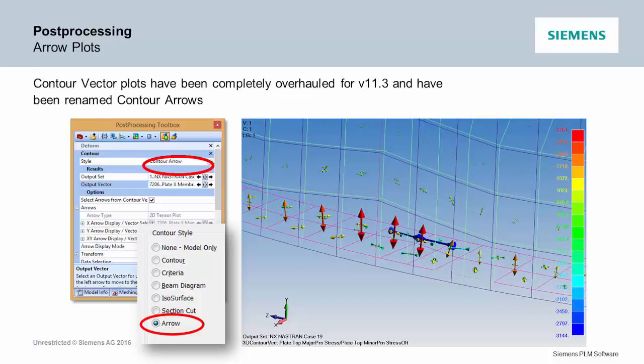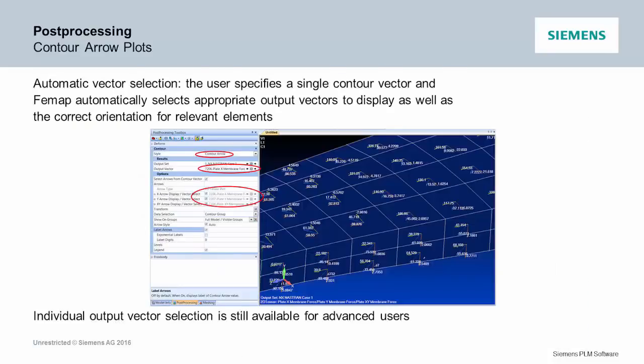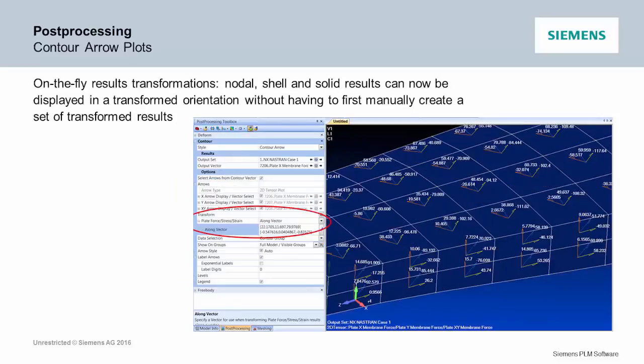We set this up so that when you pick something like membrane forces, it just automatically — when you pick X, Y, or shear — it automatically goes and gets the other components and plots them all at one time. It just does it for you. If you then press the transform button, it just transforms them; you don't have to go set up a bunch of stuff. It's so easy now to make a force plot, transform it in any coordinate system, and see it on screen with arrows that make sense.